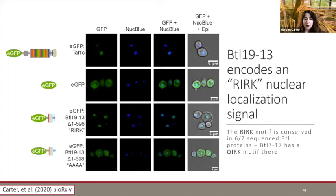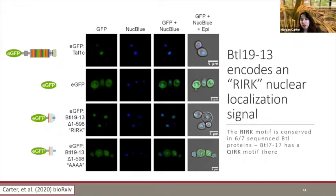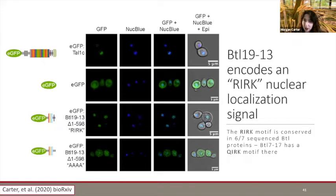On that slide I was only using a truncated BeTEL protein, because when I tried to express the full-length protein, I got no fluorescent yeast cells — which I think means it's toxic. This was further verified by the fact that the NLS mutant of the full-length protein could produce fluorescent yeast cells, but the signal was diffuse throughout the cell. So the fact that full-length BeTEL1913 appeared cytotoxic while the NLS mutant was not supports the hypothesis that BeTEL1913 is functioning in the nucleus.